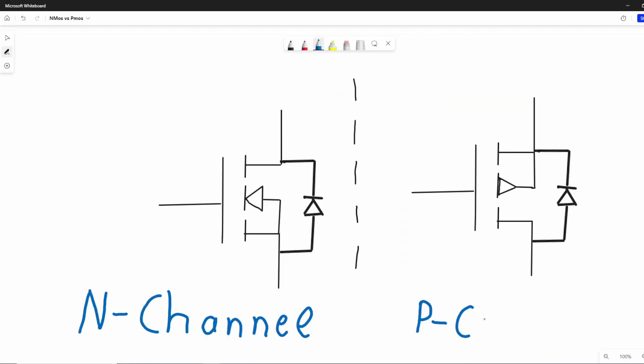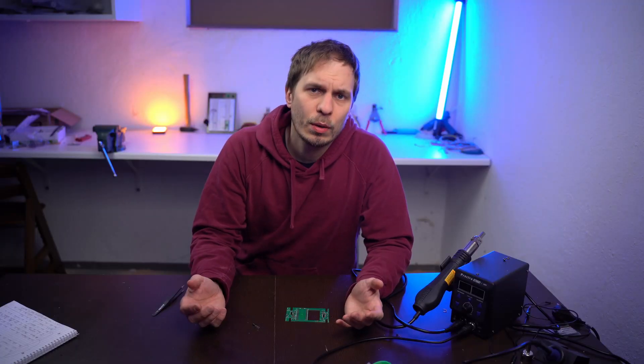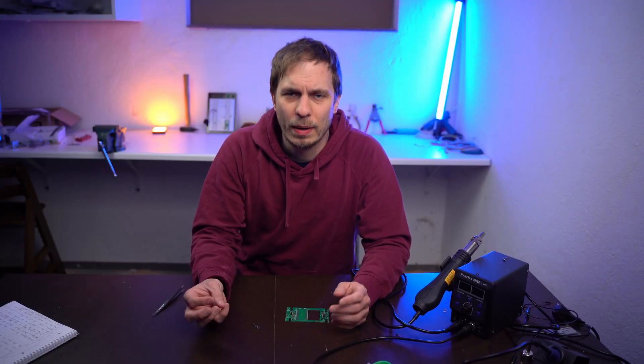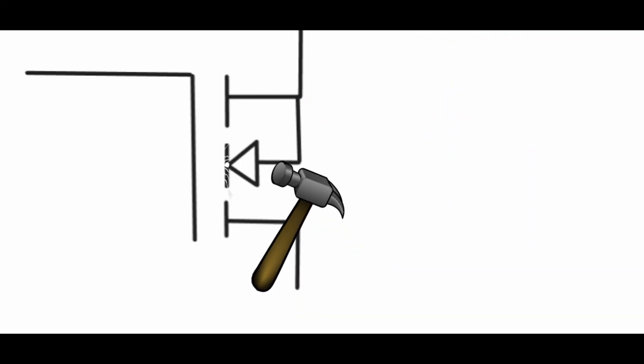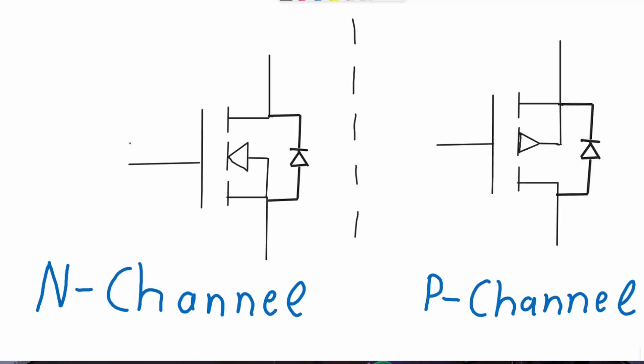On the field effect transistor side there are also two types: the N-channel and the P-channel. Again the arrows are the indicator for the type. Here we use a different memory hook to remember: the N is the notch and the P is the peak. The names of the FET's pins are gate, drain, source — or GDS.